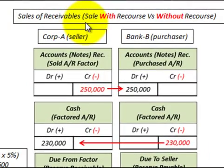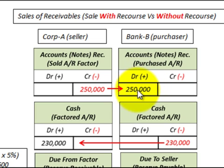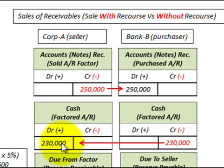We're going to be looking at sales of receivables and the difference between a sale with recourse versus a sale without recourse. Corporation A, the seller, is going to sell their accounts receivable to Bank B, the purchaser, for $250,000. Corporation A credits their accounts receivable for $250,000, Bank B debits their accounts receivable for $250,000, and Bank B pays out $230,000 cash to Corporation A.